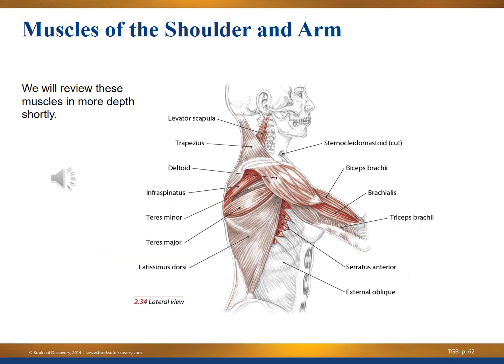Here is a lateral view of the muscles of the shoulder and arm. Starting at the lower left: latissimus dorsi, teres major and minor — our focus will be teres minor — infraspinatus, deltoid, trapezius, and levator scapula, which comes under the trap. Moving to the right side of the image, the SCM has been cut away. You can also see biceps, brachialis, triceps, serratus anterior, and an external oblique.